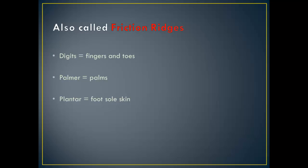Prints from someone's fingers are not the only prints that can be used for classification and identification. The most common types of prints are those from fingers and toes, called digits. There are also prints present in the palms of someone's hands or on the soles of someone's feet, called palmar or plantar prints.